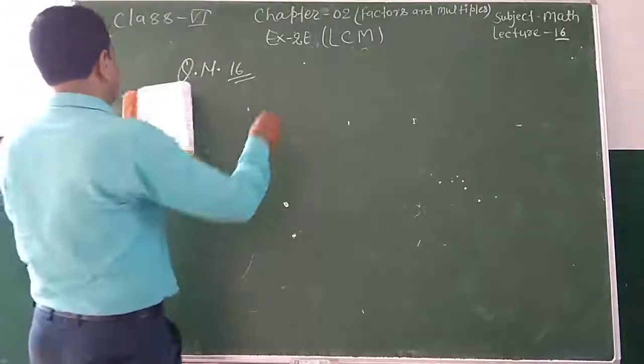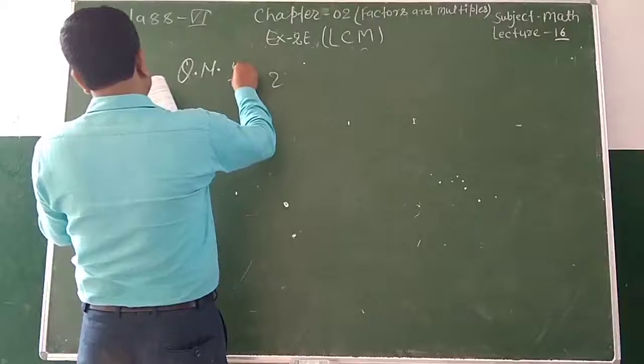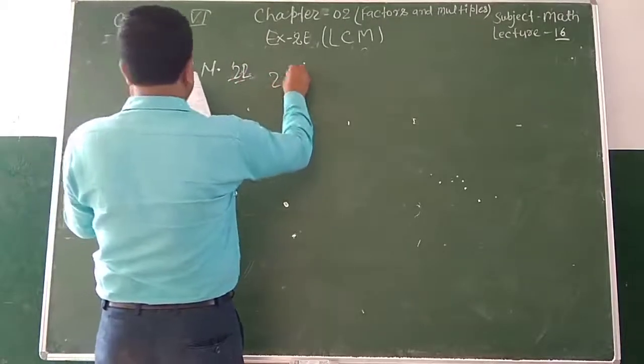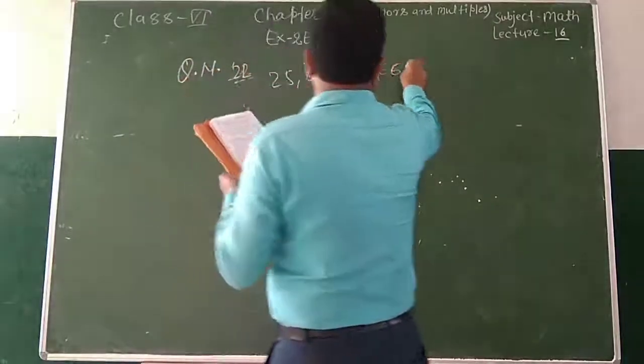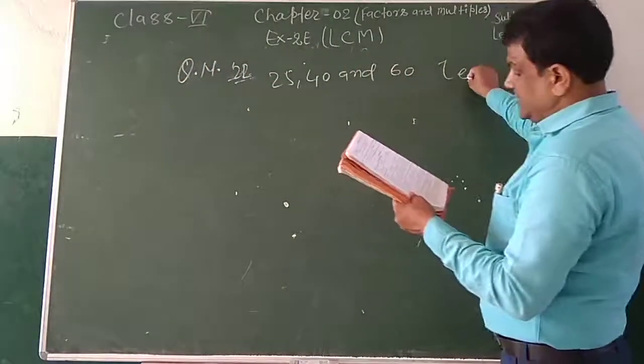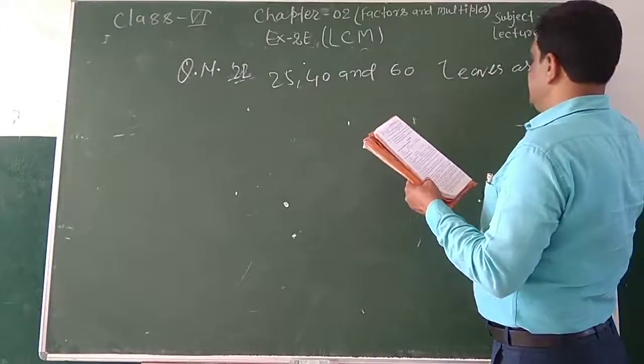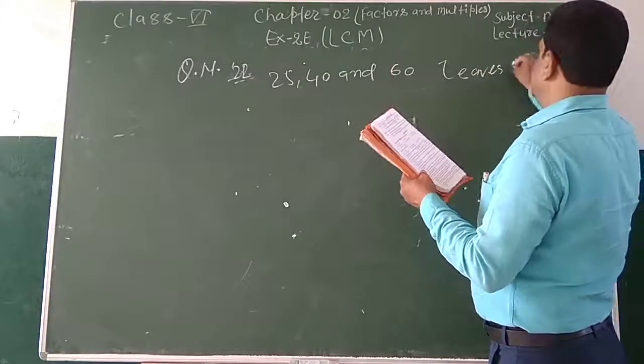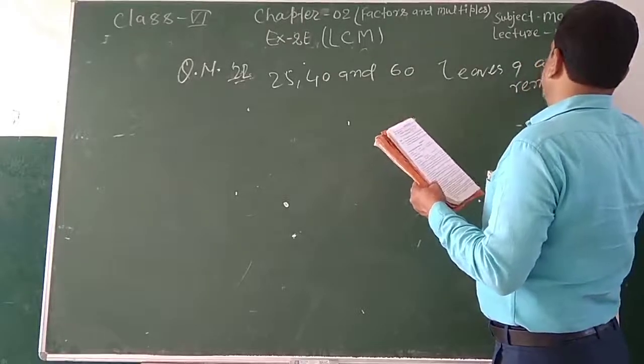The number 21, 22, find the least number 25, 40 and 60 leave. I have to tell you that leaves are 9, leaves are 9 as remainder, 9 as remainder, 9 is remainder.